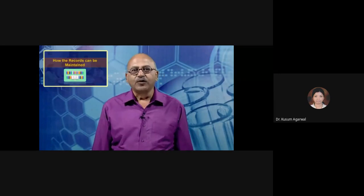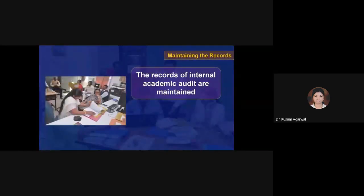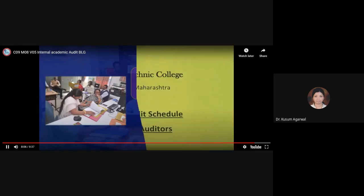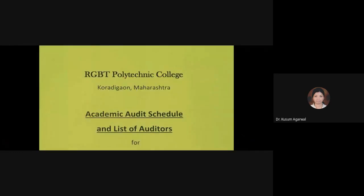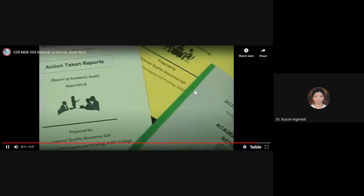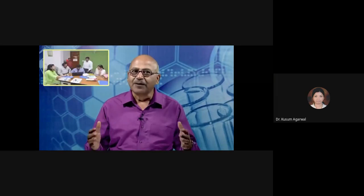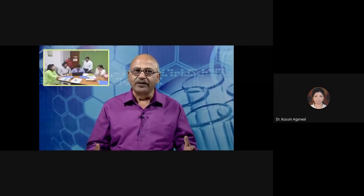Let us understand how the records can be maintained. The records of internal academic audit are maintained by the internal quality assurance cell. It maintains records such as audit schedule, audit report, and action taken to improve performance and achievement. In this topic, we have learned about the concept, purpose, and methods of conducting internal academic audit of the program. Thanks for watching.